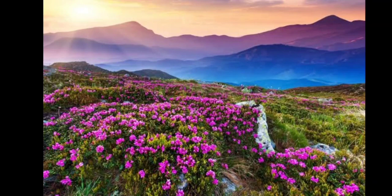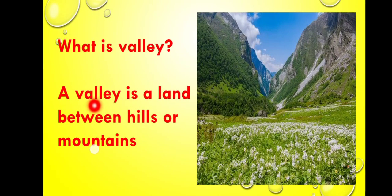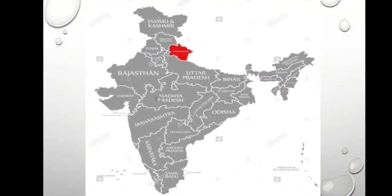Do you know why this place is called the Valley of Flowers? What is a valley? A valley is a land between hills or mountains. You can see here — this is a valley. The land between two mountains, or the land between two hills, is called a valley. That is why this place is called the Valley of Flowers.